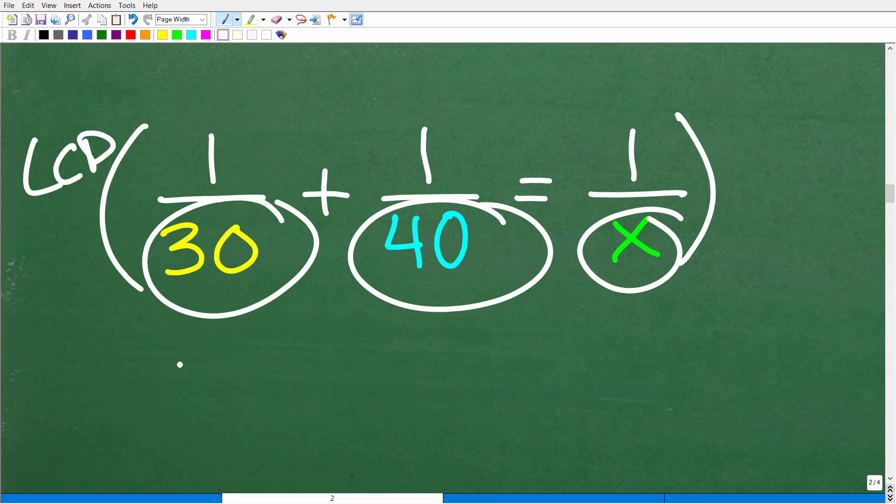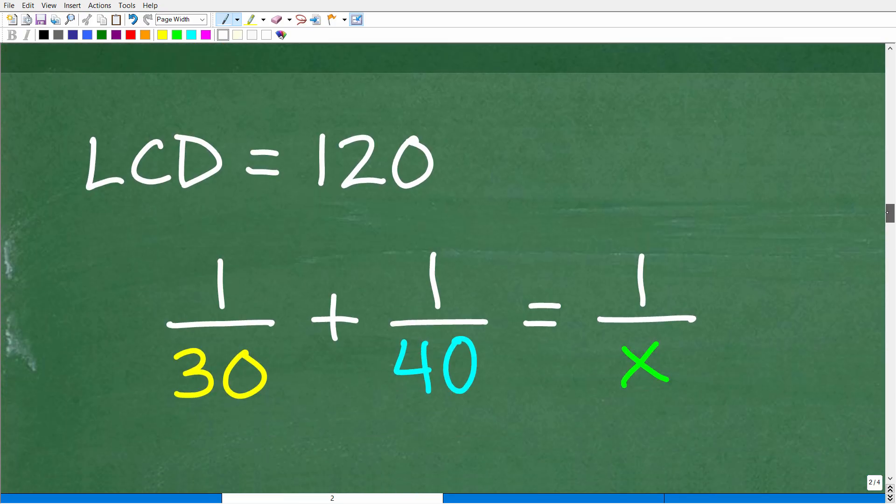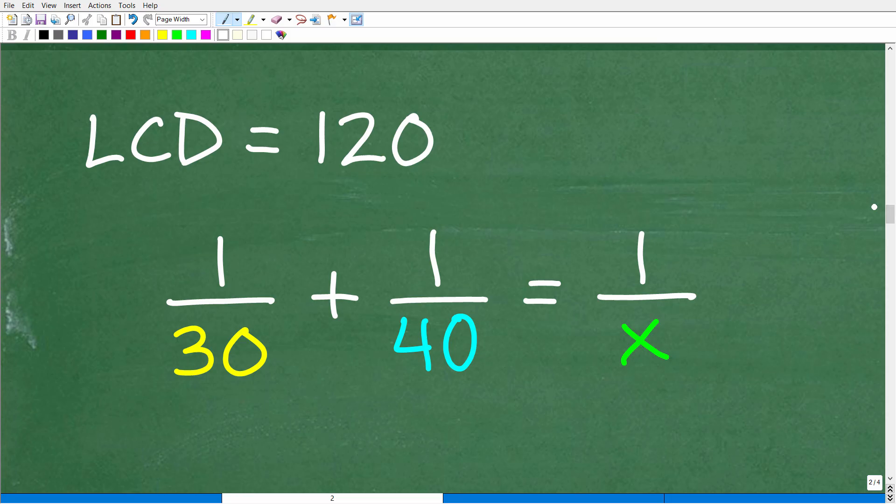There's a couple different approaches we could take to solve this equation. Any time you have fractions in an equation, the easiest thing to do is to figure out what the LCD is of all the denominators and just multiply the entire equation by the LCD. You'll be able to clear the fractions.